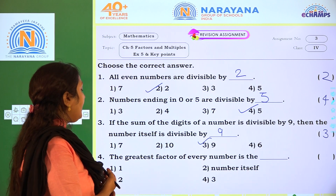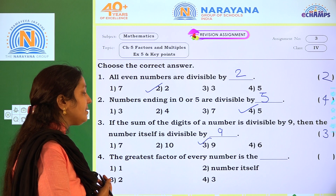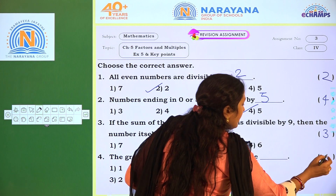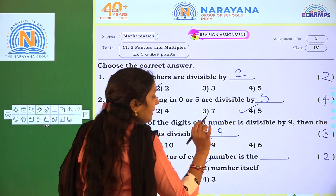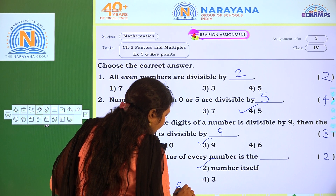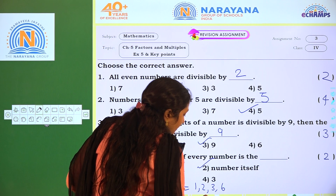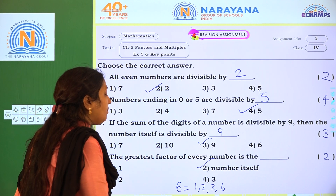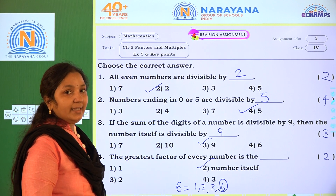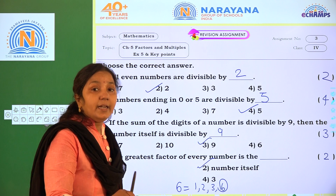Next one: the greatest factor of every number is the number itself. Option 2 is correct. Already you know that one. Take the factors of 6 — what are the factors of 6? 1, 2, 3, 6. So which is the greatest factor of the given number? 6 only, meaning the number itself. So the greatest factor of every number is the number itself.